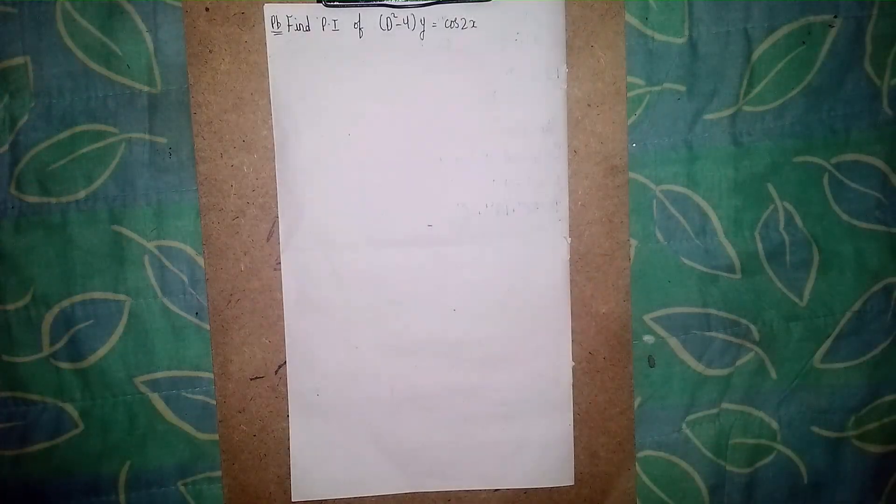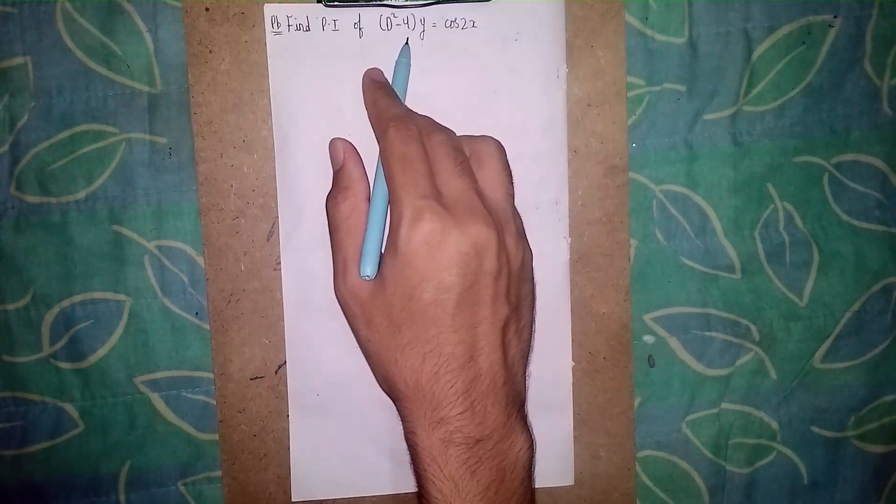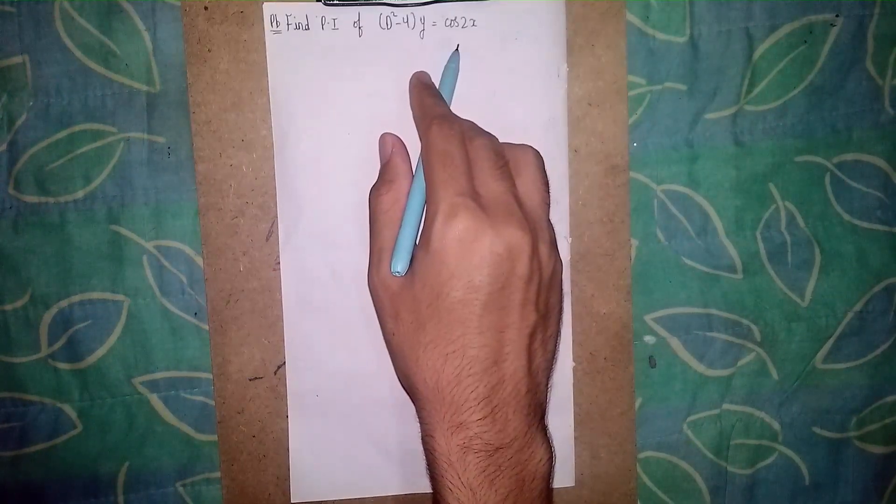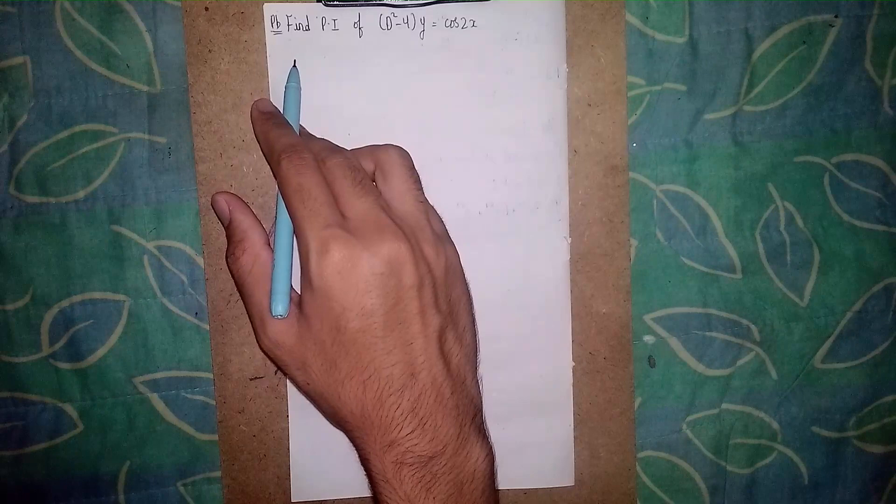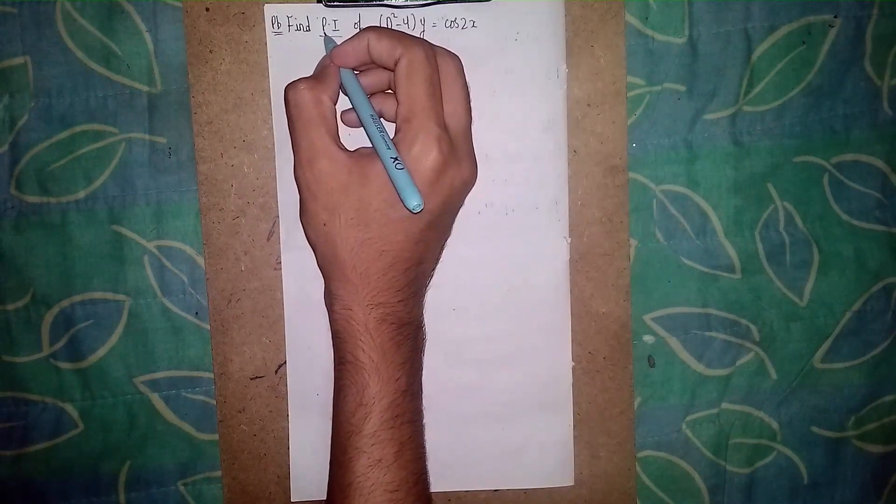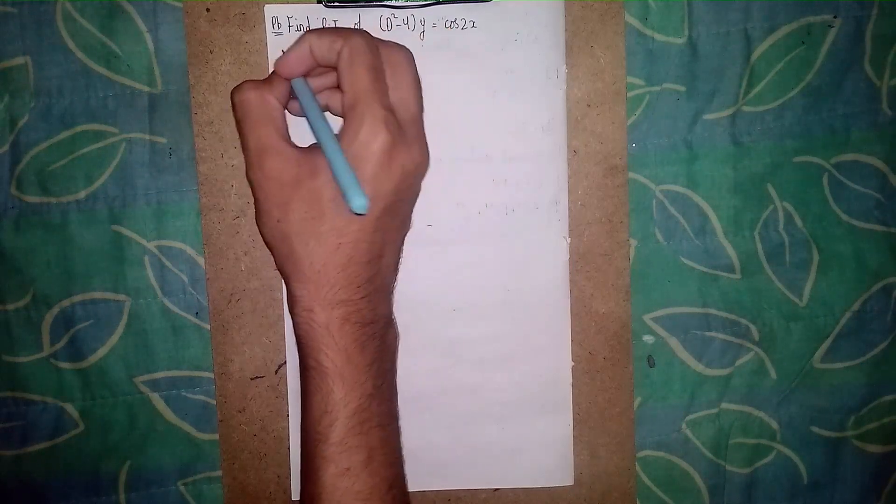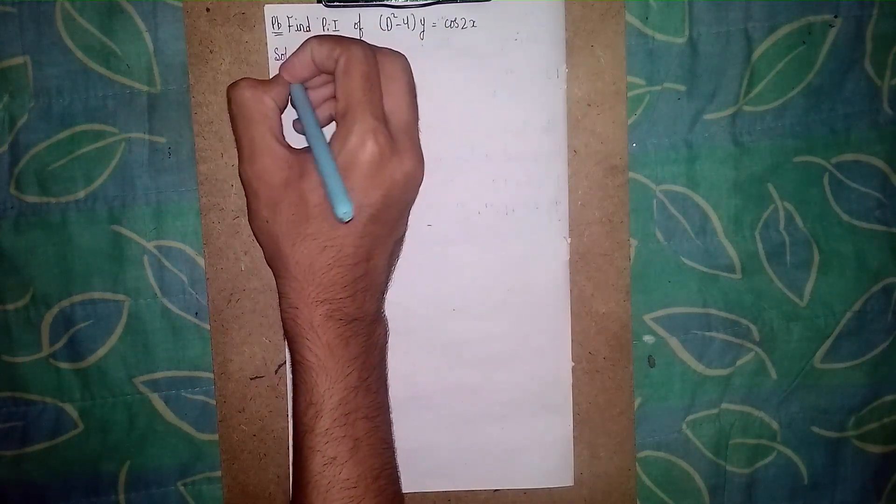Hello students, welcome back to my channel. This question is: find PI of (D² - 4)y = cos 2x. So this is a non-homogeneous linear differential equation. PI is particular integral. In the question it doesn't tell PI particularly, it's denoted by PI. This is a short one, so write first the solution, then write the question.